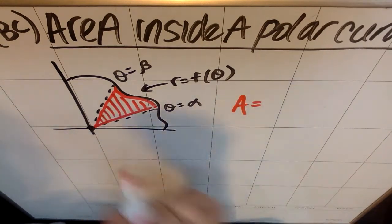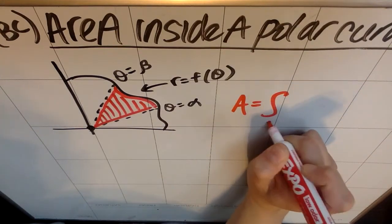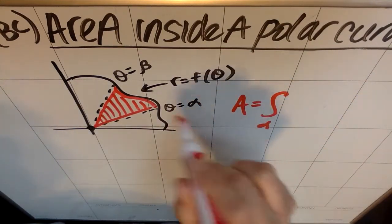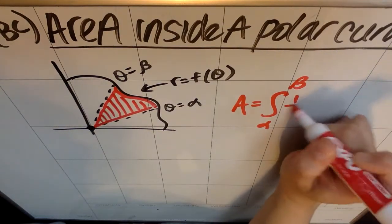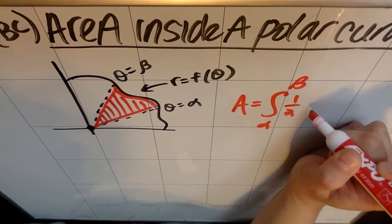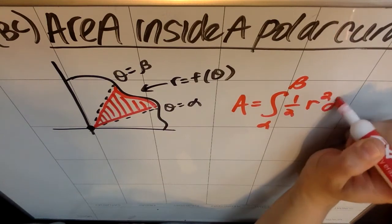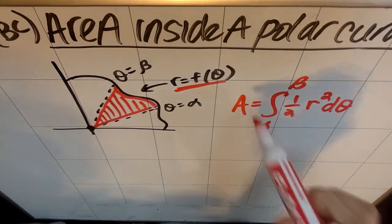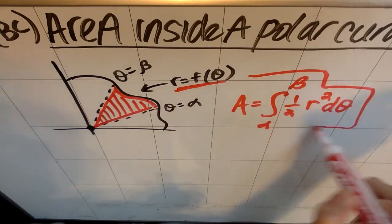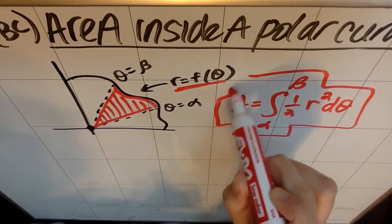This area for this red shape should be the integral from alpha, the starting of the two angles, the lower angle, to beta, the larger of the angles. It's one half and then R squared with respect to theta. So my R is some function of theta. This is the formula you're going to use anytime you're trying to find an area inside a polar curve.